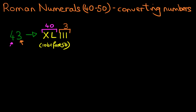And that is how we write down 43. First of all, write down 40. That is XL. And then write down the 3: I, I, I. 43 in Roman numerals is XL III.